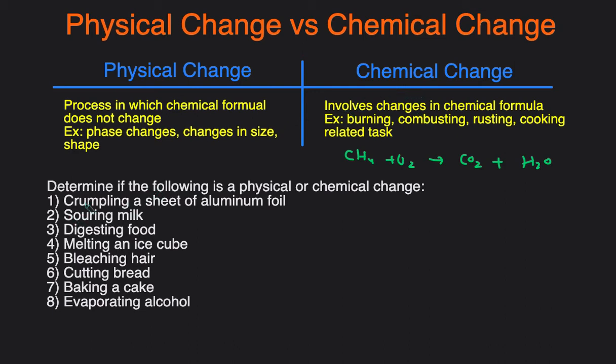Okay, now let's take a look at a couple examples where we have to determine if these are physical or chemical changes. The first one, crumbling a sheet of aluminum foil. I'll use P for physical and C for chemical. So this would just be a physical change because it's still aluminum before and still aluminum after, but you just changed the visuals.